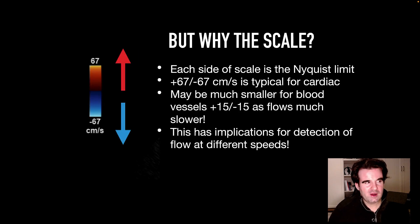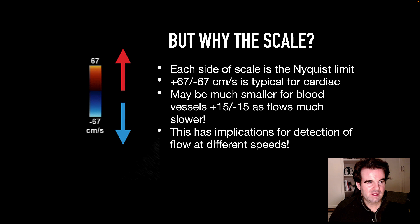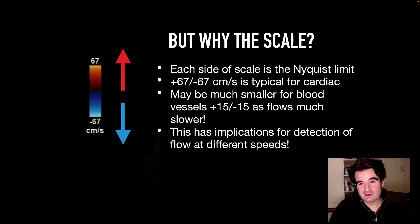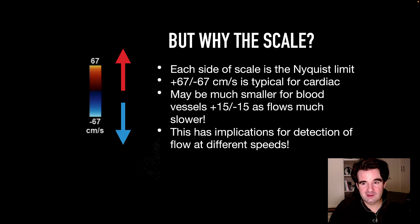You may be wondering why there is this scale. Each side of the scale is called the Nyquist limit. Here we're seeing plus or minus 67 centimeters per second of actual blood flow, which is typical for cardiac imaging — somewhere between 60 to 70 centimeters per second. It would be much smaller for blood vessels, around plus or minus 15, as flows can be much slower. This has implications for detection of flow at different speeds.